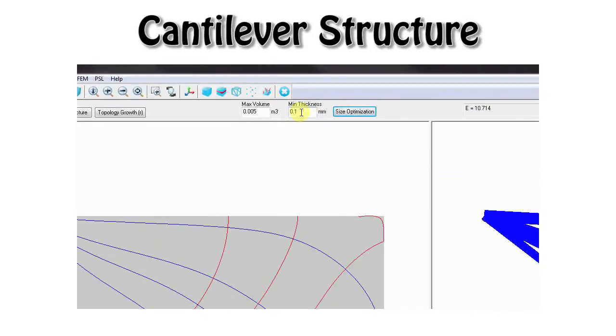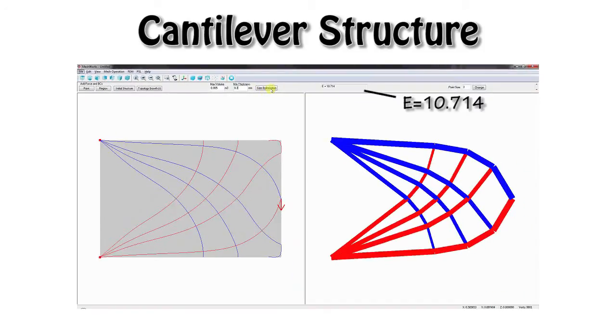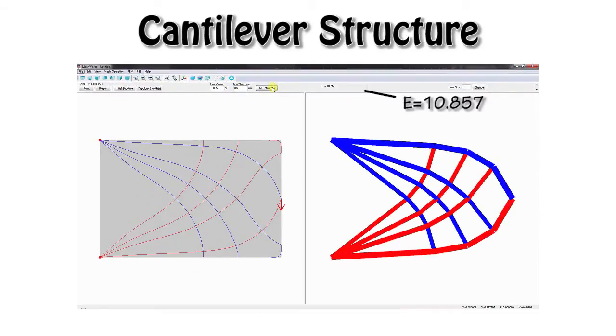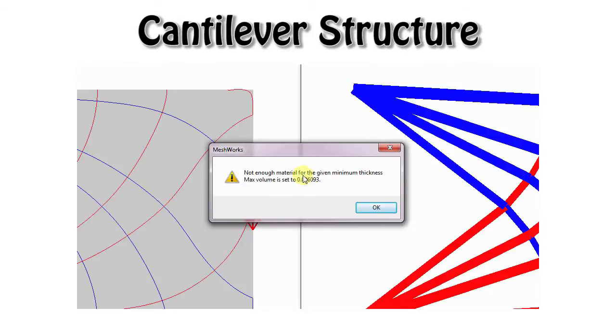Another property is related to the manufacturing constraint about the minimum thickness that can be fabricated. We can adjust it to get a different result. If the total volume is not enough to satisfy the minimum thickness, our design platform will report and update the maximum volume accordingly.